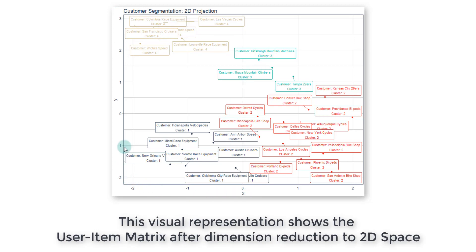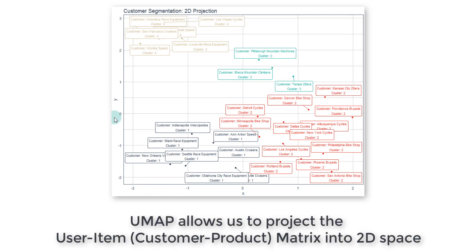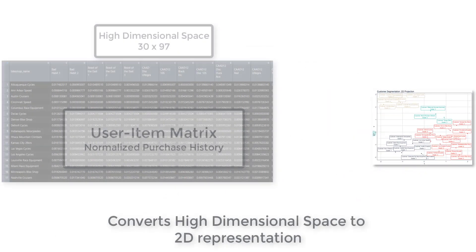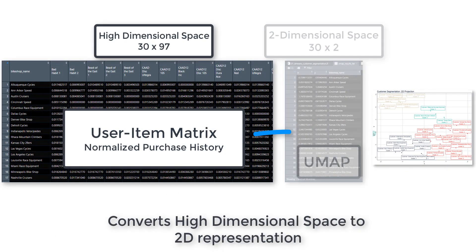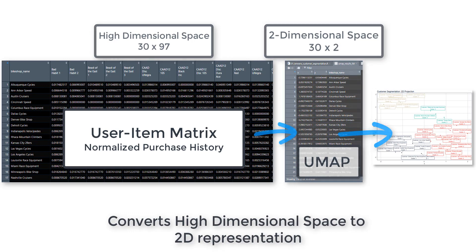And we're plotting them in a two-dimensional space, which is just this 2D projection. And we're going to use this algorithm called UMAP to do that, and all UMAP does is it takes the high-dimensional space and allows us to convert it to an X and Y so we can plot it. So it just helps us plot these points.